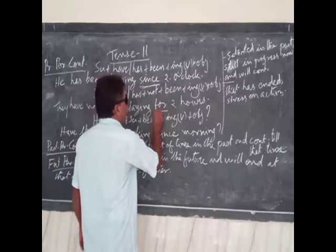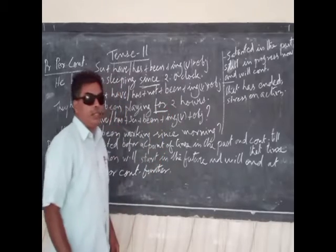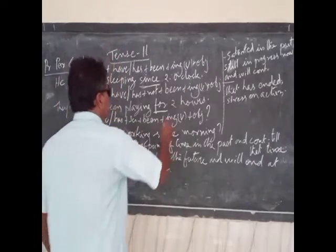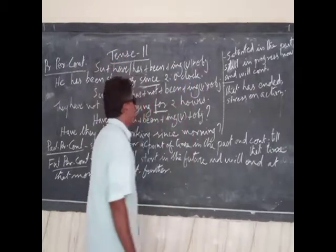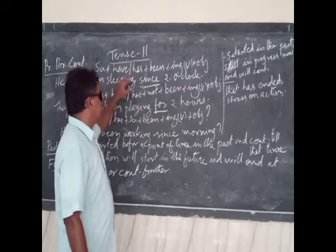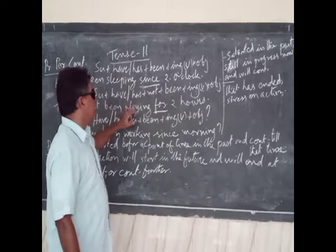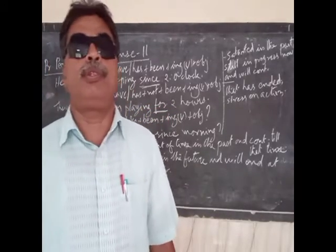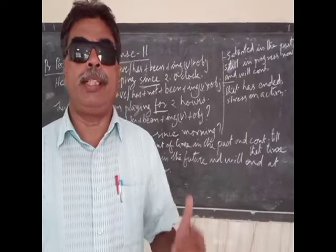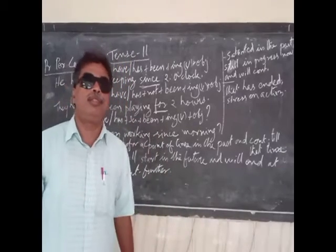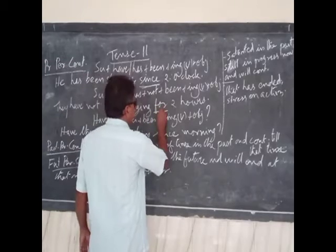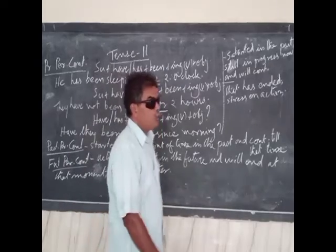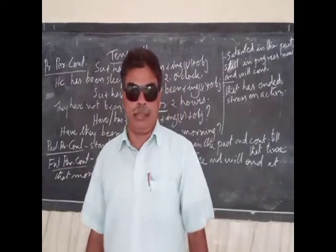The same words 'since' and 'for' are used in perfect continuous tense. 'For' talks about the quantity or duration of time — for example, 'they have not been playing for 2 hours' means they did not play for 2 hours, their playing did not continue for 2 hours. So 'for' is used when we talk about quantity of duration, and 'since' is used when we talk about the starting point of the action.